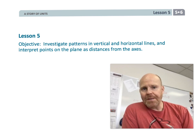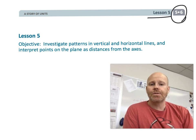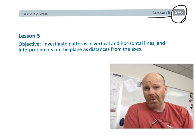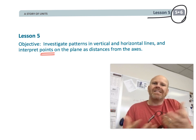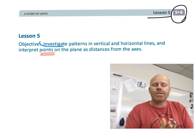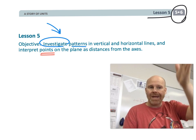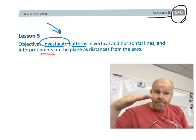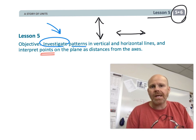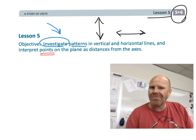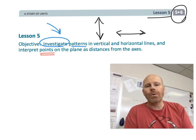This is fifth grade module six lesson five. In this lesson we continue having our students practice plotting and locating points and identifying coordinate pairs, but this time we're going to do it inside of an investigation to understand the patterns of what happens when we plot points and end up creating a vertical line or a horizontal line. Mathematics is the study of patterns.